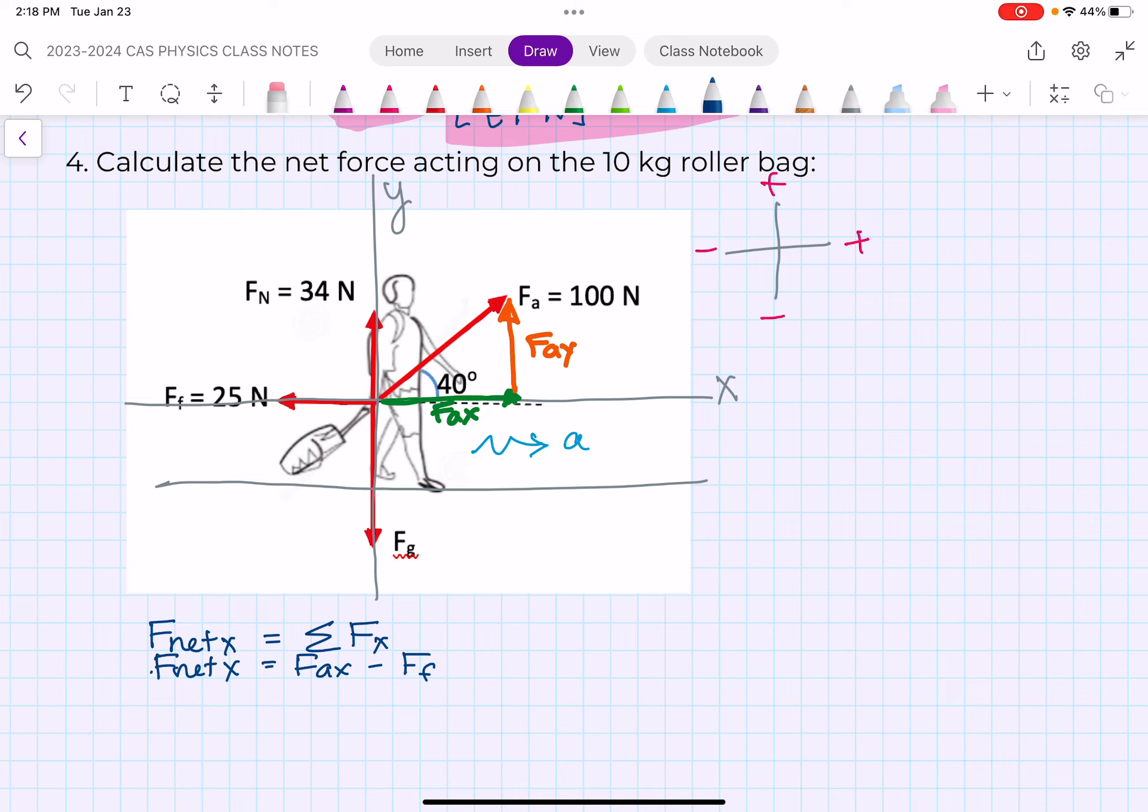The other thing we'll do is F-net in the y direction is equal to the sum of the forces in the y direction. So what do we have in the y direction? Well, we have the normal force acting up, we have gravity acting down, so we could say F_N minus F_g. And then we have this partial force, right, this FA_y, and it's kind of acting upwards, so I would say plus FA in the y direction. Now we've got to put in some numbers here.